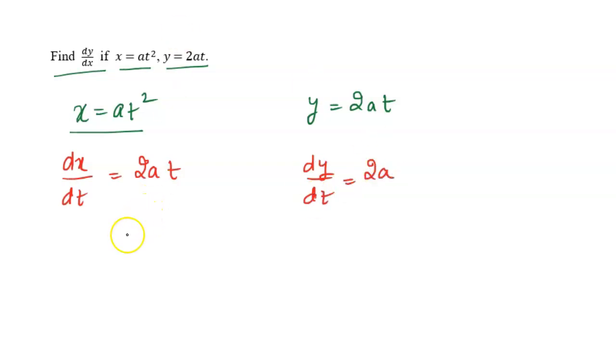Now dividing both, so we will get here dy over dt upon dx over dt where dt dt is cancelled.